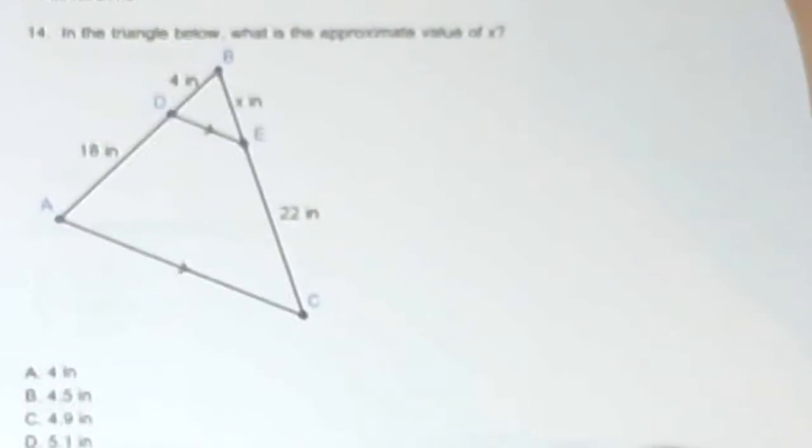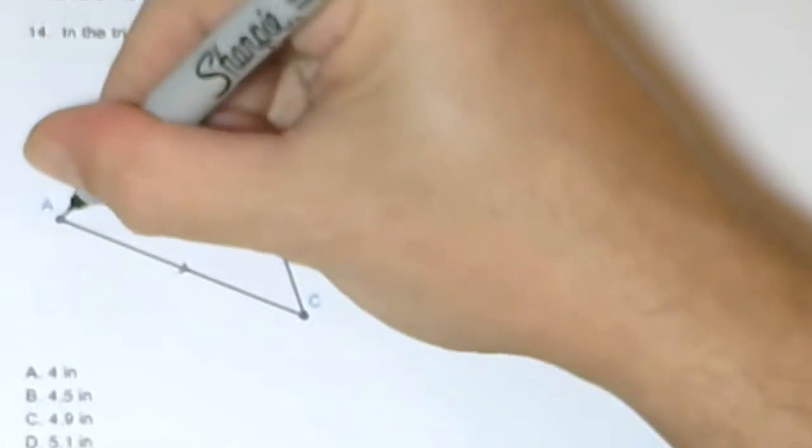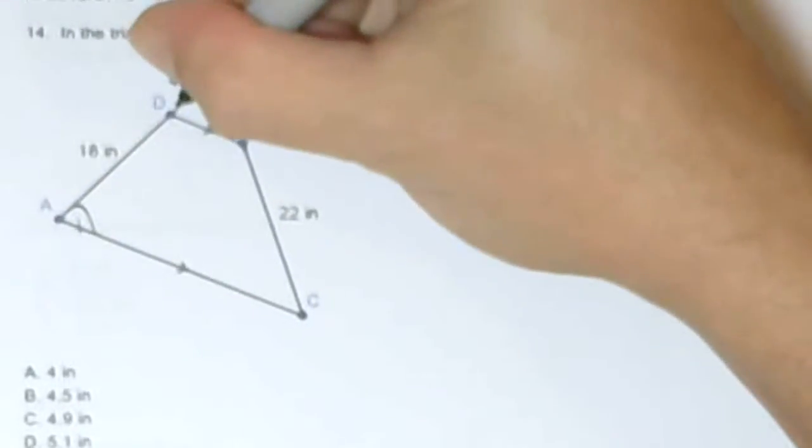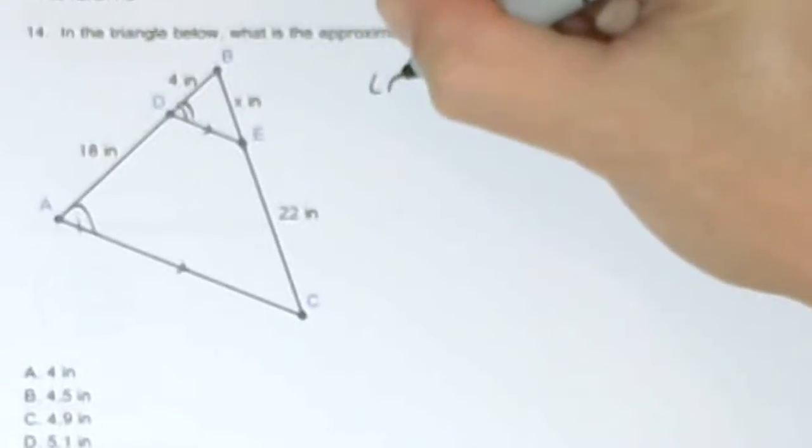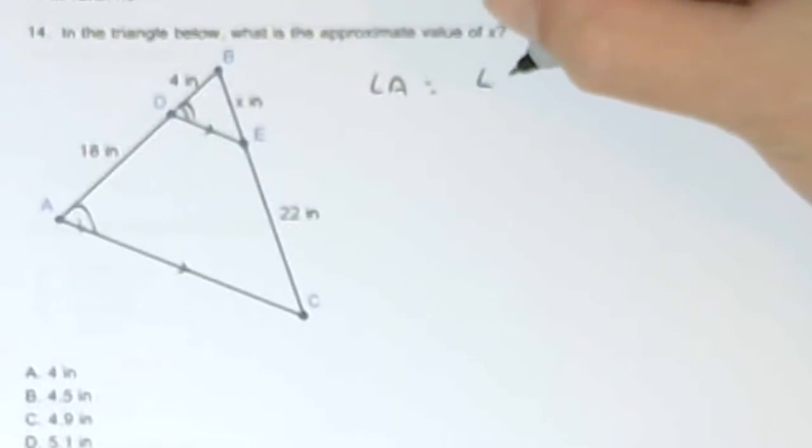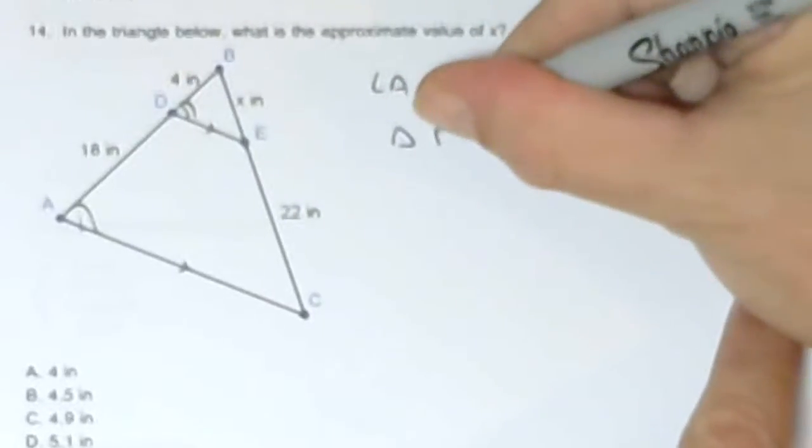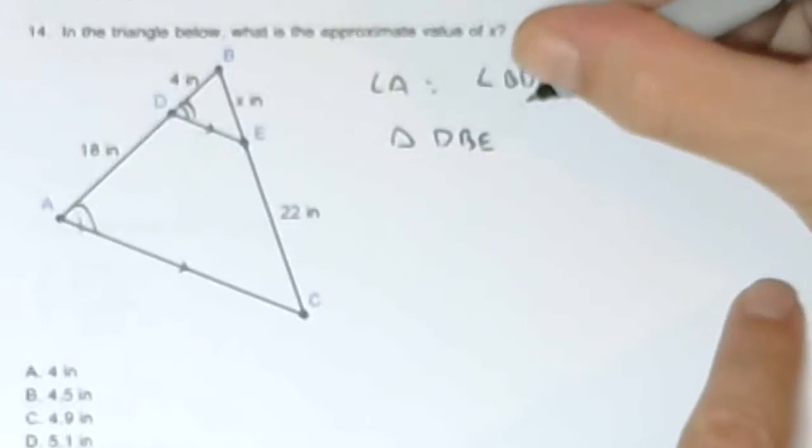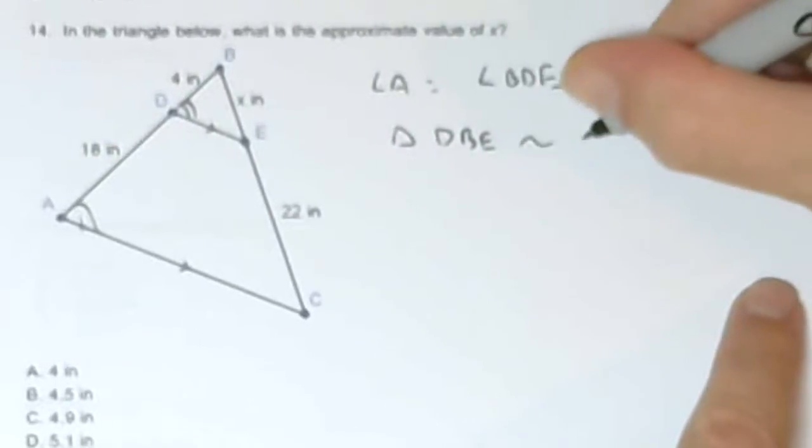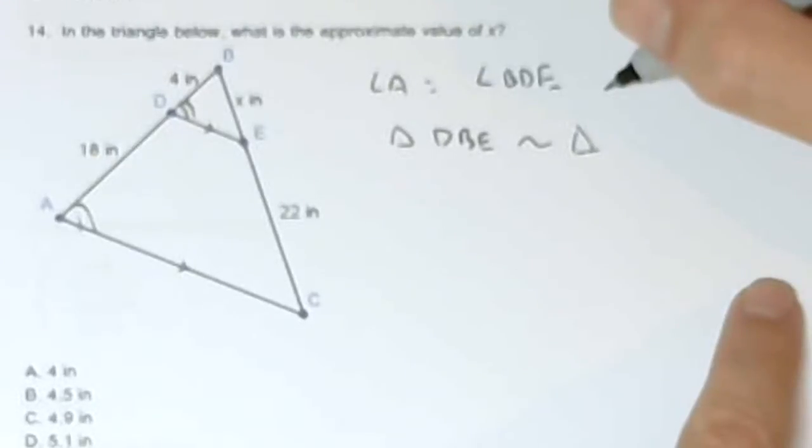In the triangle below, what is the approximate value of X? Okay, again we're going to have, because we have parallel lines, angle A is going to be equal to angle BDE. So I'm going to basically get similar triangles. Triangle DBE is similar to triangle ABC.